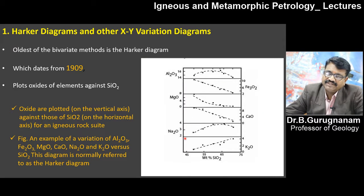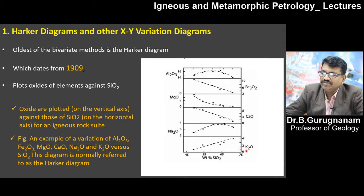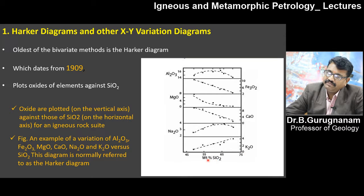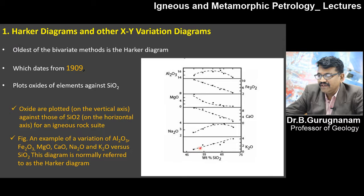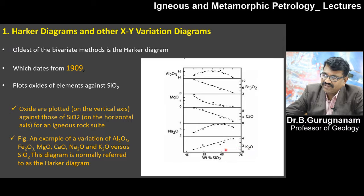A best example of a bivariate diagram has weight percentage of silicon dioxide on the horizontal axis and other oxides — aluminum oxide, iron oxide, ferrous oxide, magnesium oxide, calcium oxide, sodium oxide, and potassium oxide — on the vertical axis. In this diagram, you can see the variations from 45% SiO2 up to 75% SiO2. If silicon dioxide increases, the percentage of potassium also increases; if silicon dioxide decreases, potassium also decreases.